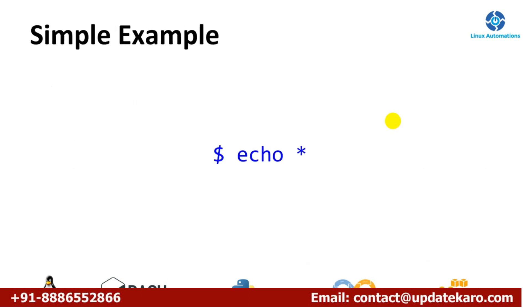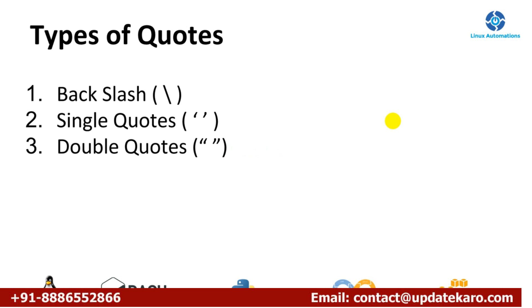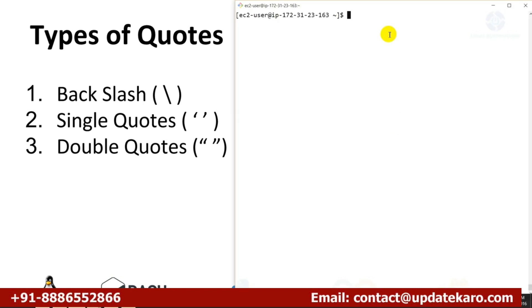In this video we are going to talk about eliminating the speciality of special characters using a simple example with the echo command. I'm going to provide a special character to the echo command and demonstrate how you can eliminate that speciality using three ways: backslash, single quotes, and double quotes.